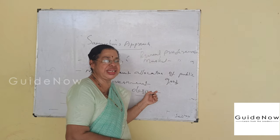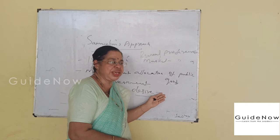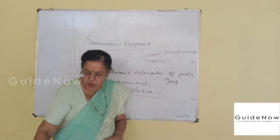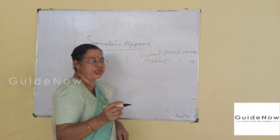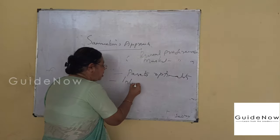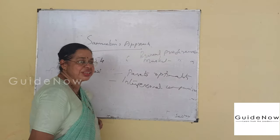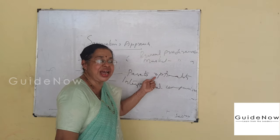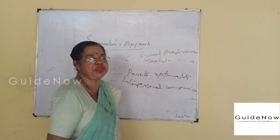He explained the most efficient allocation of public goods. To show economic efficiency in the allocation of public goods, he introduced two important concepts: first, Pareto-optimality, and second, interpersonal comparison.